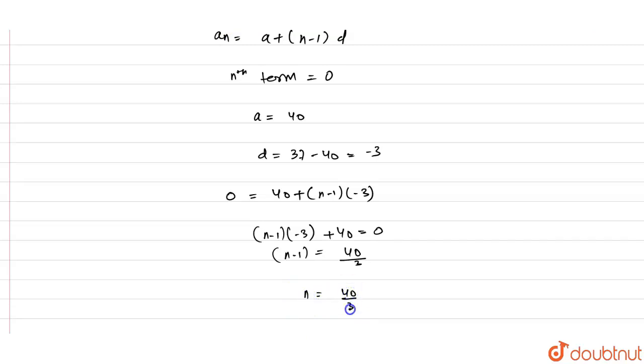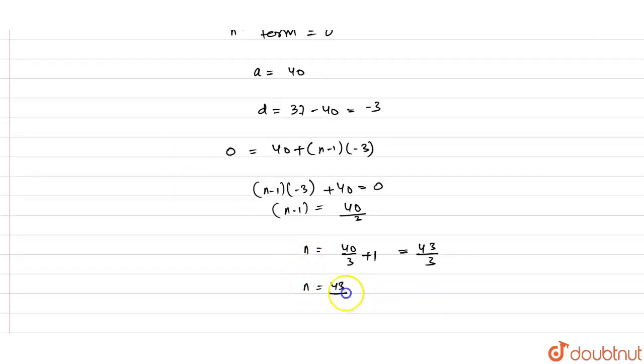So n equals 40 by 3 plus 1, equals 43 by 3. So n equals 43 by 3.